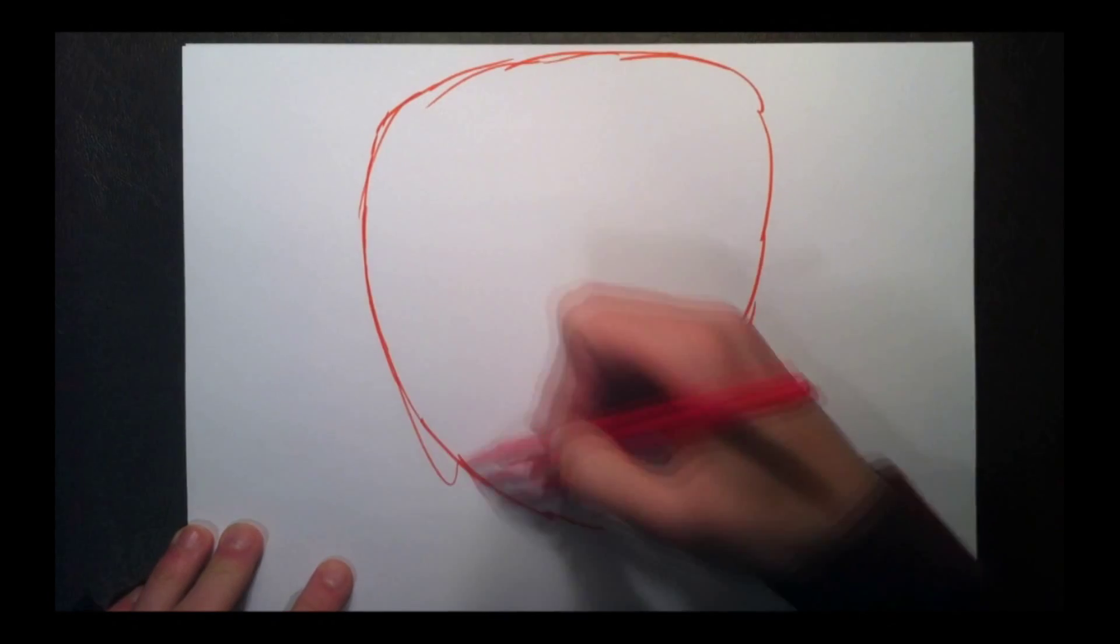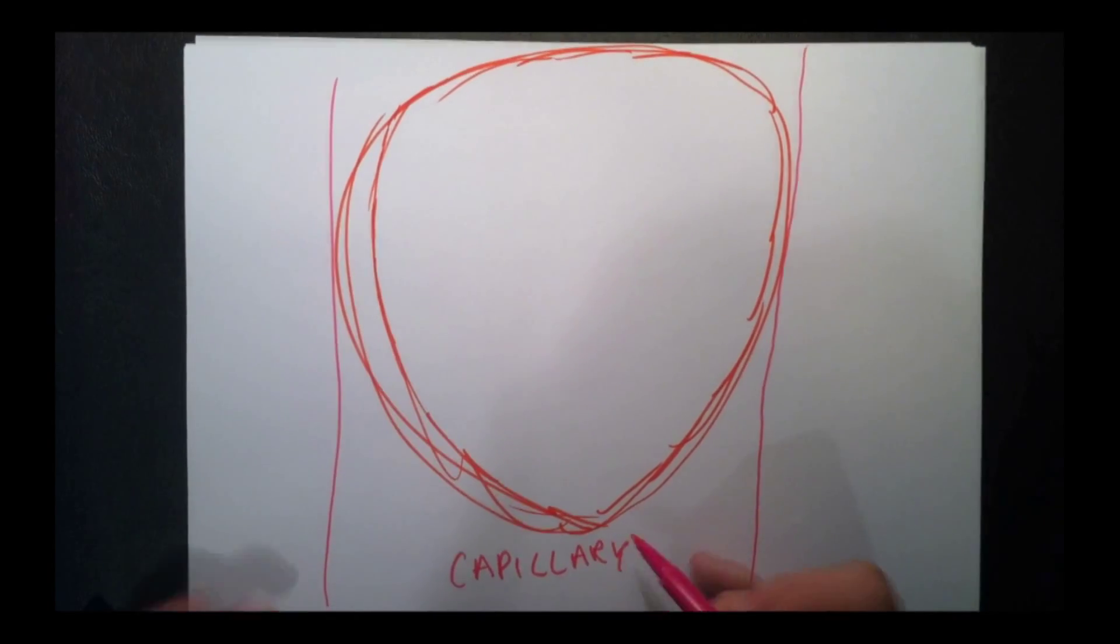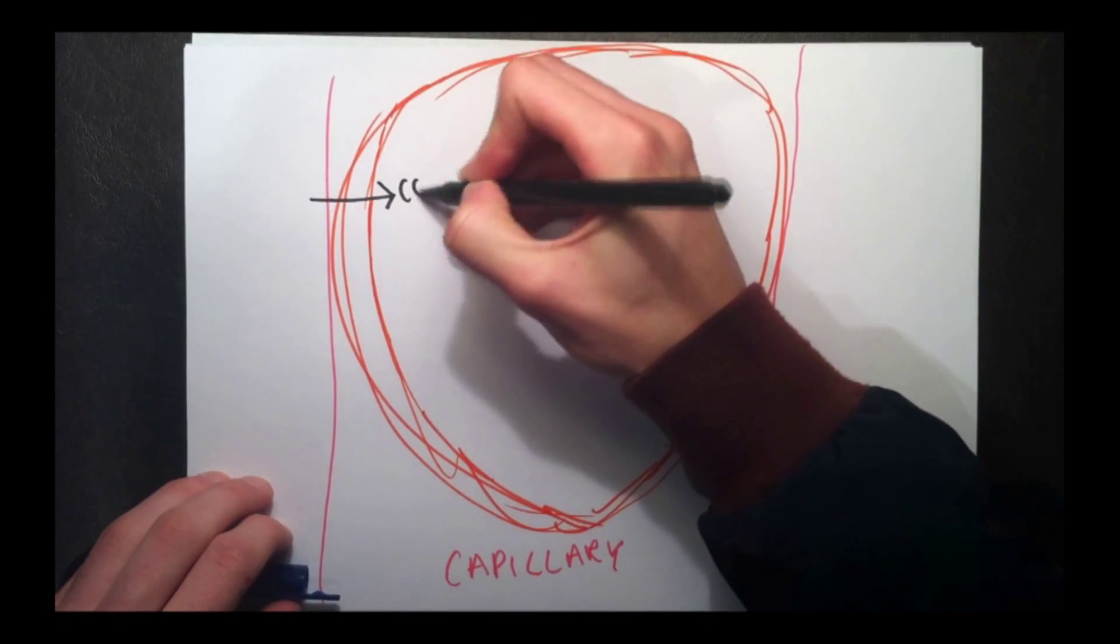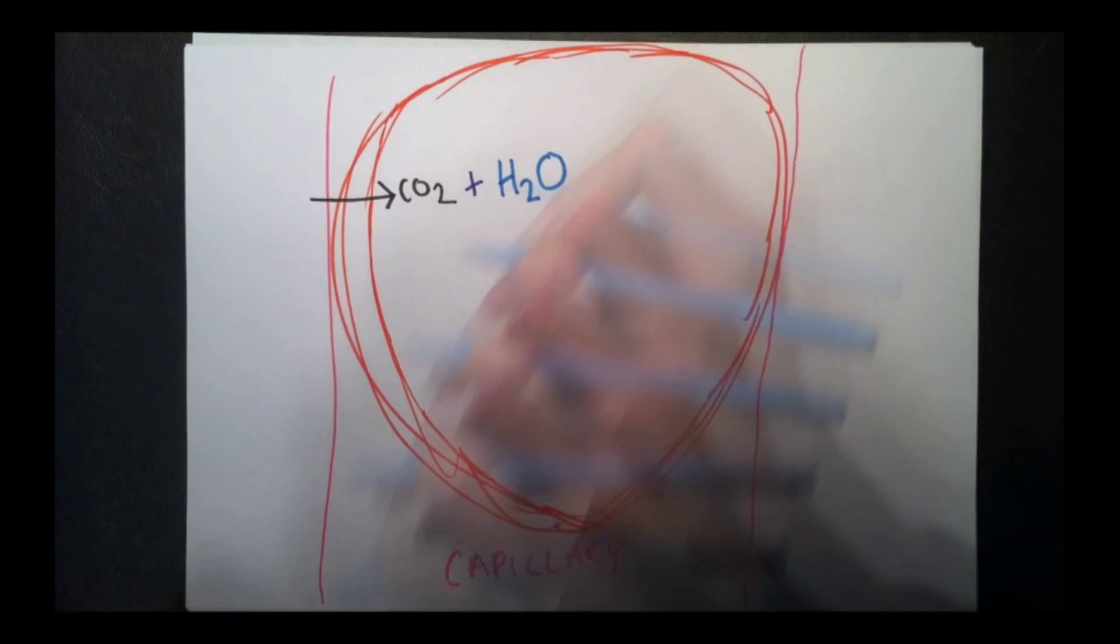So here is the zoomed in red blood cell. The red blood cell is in the capillary. So here is how it works. Carbon dioxide is diffused into the red blood cell. In the cell, it reacts with water.